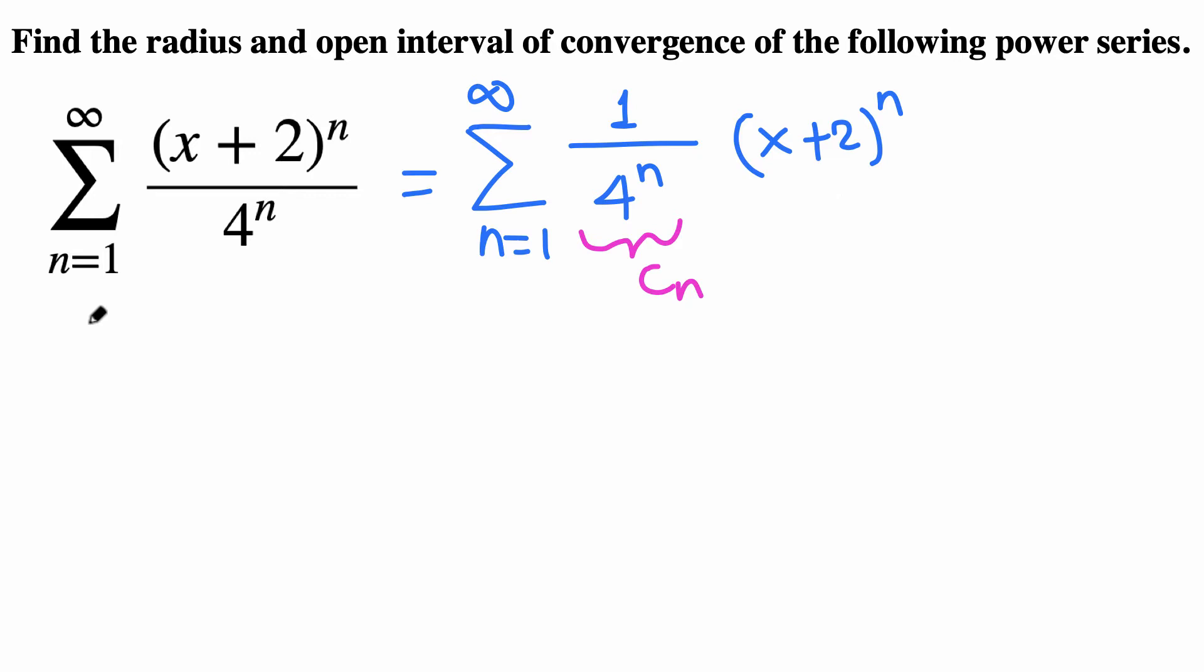The coefficient here is cn = 1 over 4^n. Then the next coefficient cn+1 would be 1 over 4^(n+1). By an application of the ratio test, the radius of convergence...